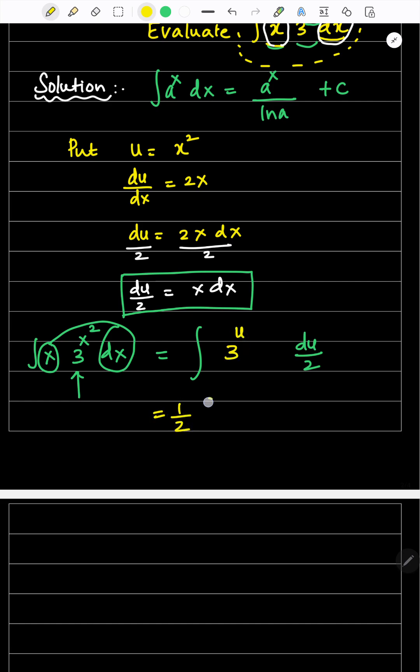Now, this 1/2 will come out: integral of 3 to the power u du. I am going to use this formula. In place of x, you have u, and there is a number on the bottom and the variable is on top.